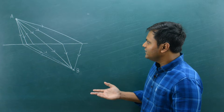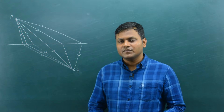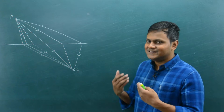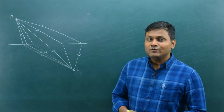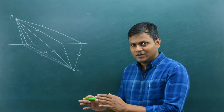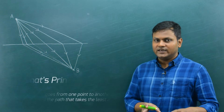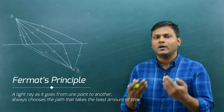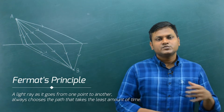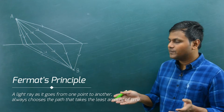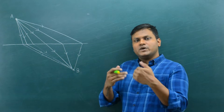There are probabilities associated with a light ray choosing a particular path as the wave goes from one medium to another, and it just so happens that the probability with the maximum value is associated with the path with the least amount of time. We can use this simple principle to demonstrate Snell's law. This principle is known as Fermat's principle: a light ray going from one point to another always chooses the path that takes the least amount of time.